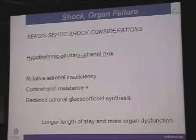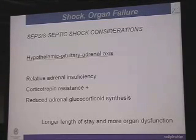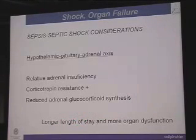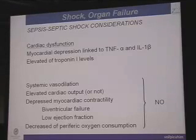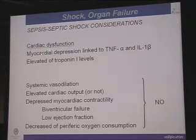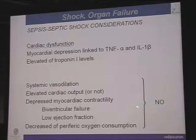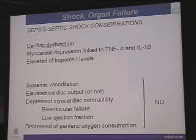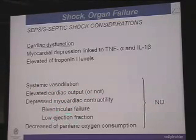We now know that there is also a problem in the hypothalamic-pituitary-adrenal axis. Whenever we have this problem, it is demonstrated that we will have a longer length of stay and more organ dysfunction in patients. Nitric oxide will have an important role for cardiac dysfunction. This cardiac dysfunction will be depressed when we have a lot of nitric oxide production, producing systemic vasodilatation, elevated or depressed cardiac output, myocardial depression by ventricular failure, and low ejection fraction with a decrease of peripheral oxygen consumption.